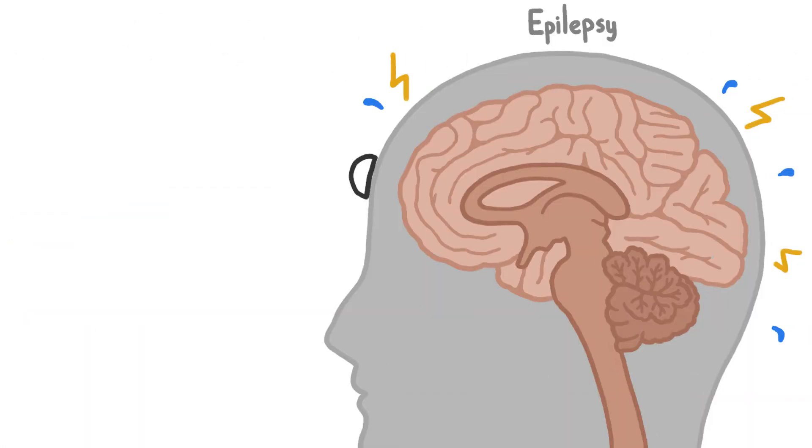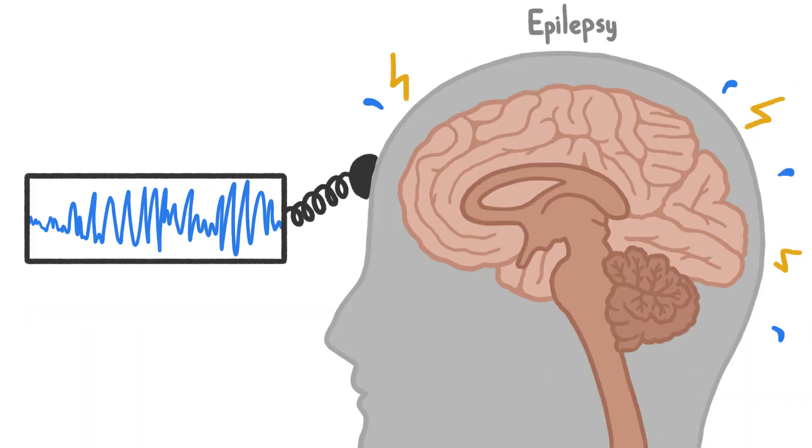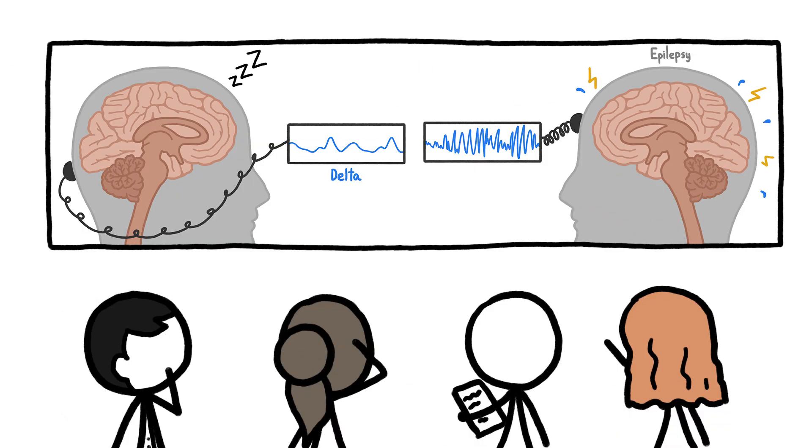In unhealthy brains, on the other hand, we see abnormal brain waves, which suggests that the rhythms do something important. The question is, what?